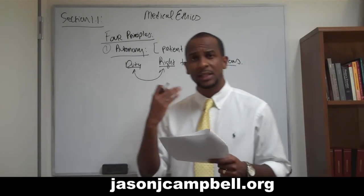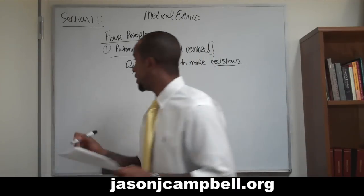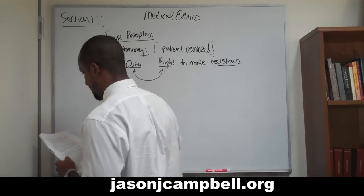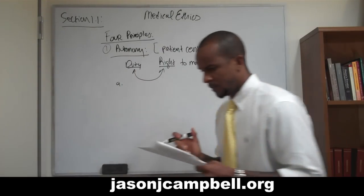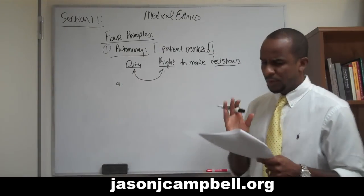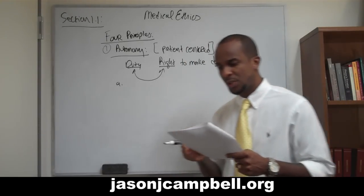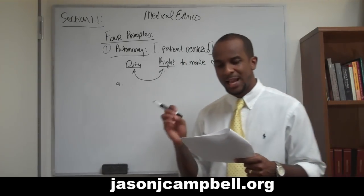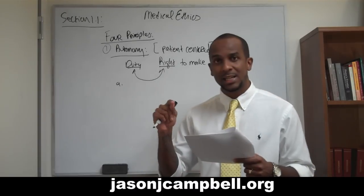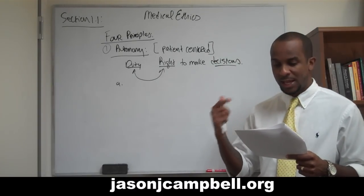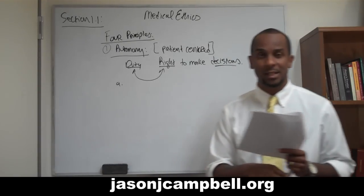If you understood the nature of that question, then you're fine. So this is section A: the ethics of autonomy is set in opposition to a virtue-based ethic, which is characterized as paternalistic in nature.